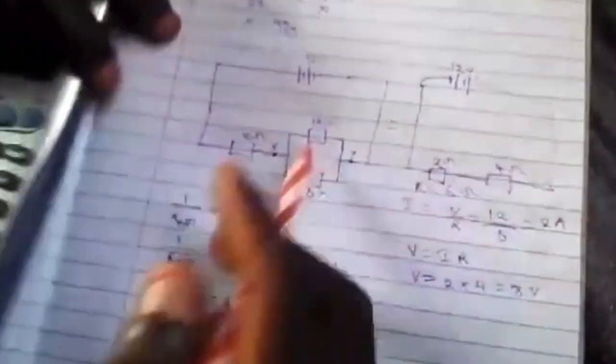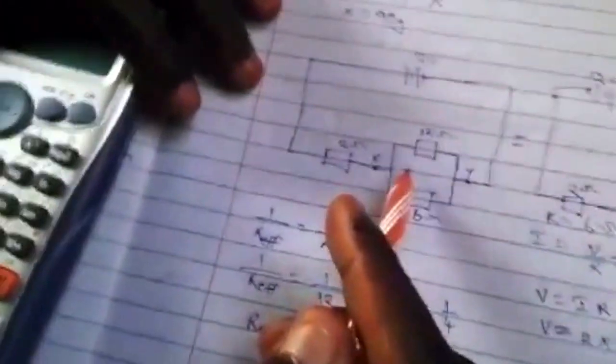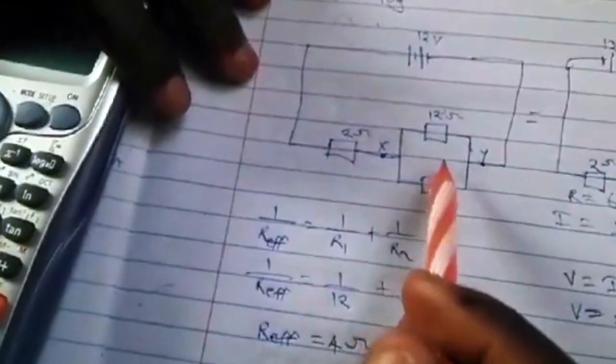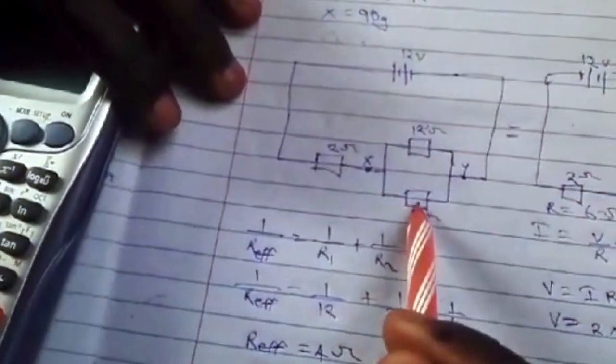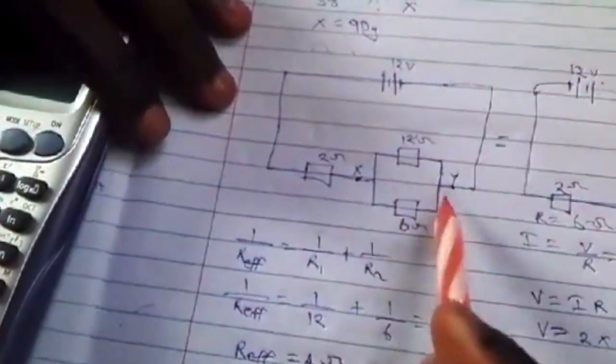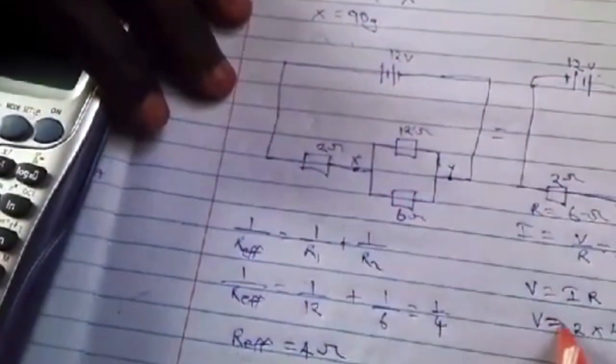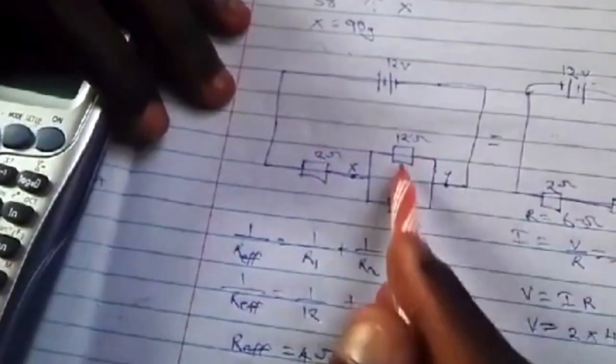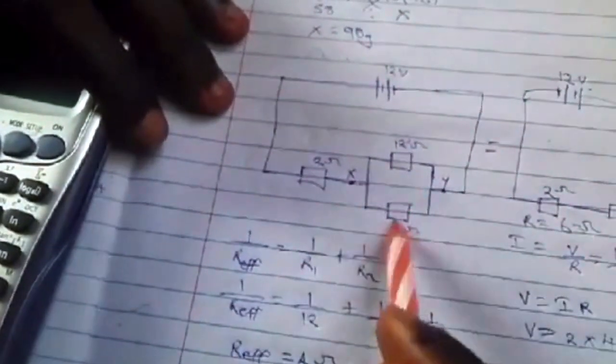We go back to the first circuit. We want to find the current in this 6-ohm resistor. It will be different. Since the voltage is the same—it's 8 volts, since they're in parallel—the voltage will be the same, but what about the current?